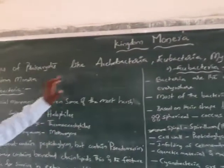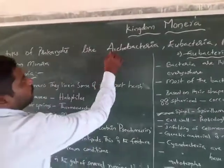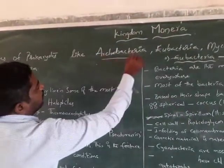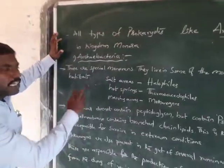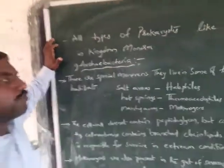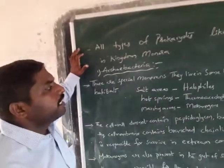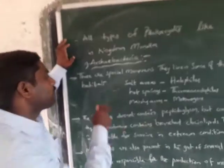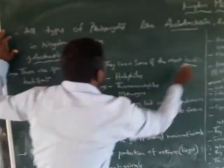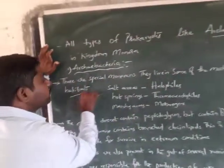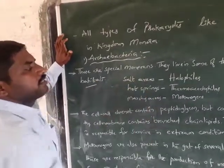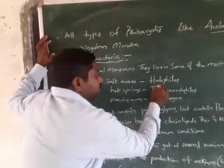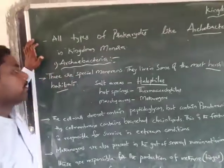First, we will discuss archaebacteria. These are the special Monerans. They live in some of the most harsh habitats. Those living in salt areas are called halophiles.